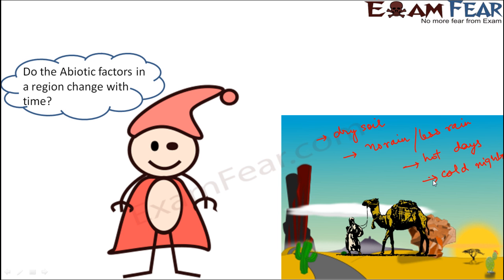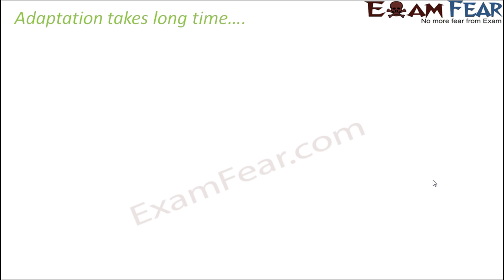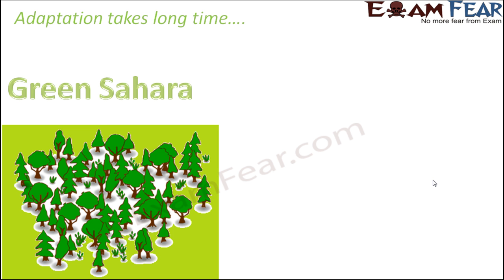So it is very much possible that the abiotic factors in a region can change with time. This desert might change into a place with more trees — the type of soil would change, the amount of rain would change, the climatic conditions, and the temperature during the days and nights might also change. The abiotic factors do not change all of a sudden; it takes a very, very long time. Adaptation is a process that takes a long time.